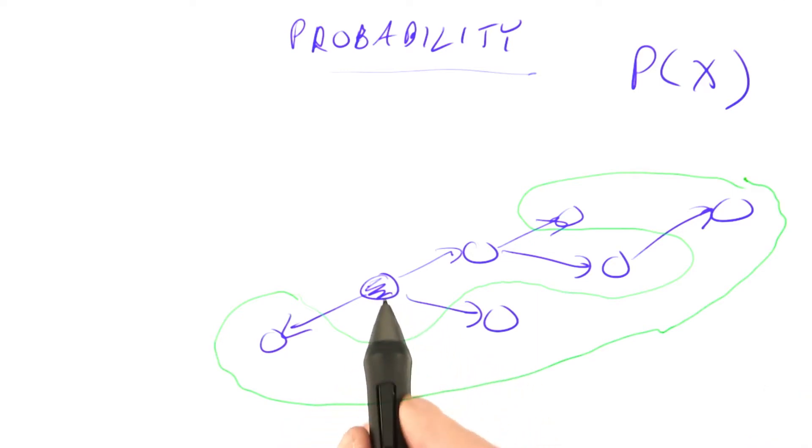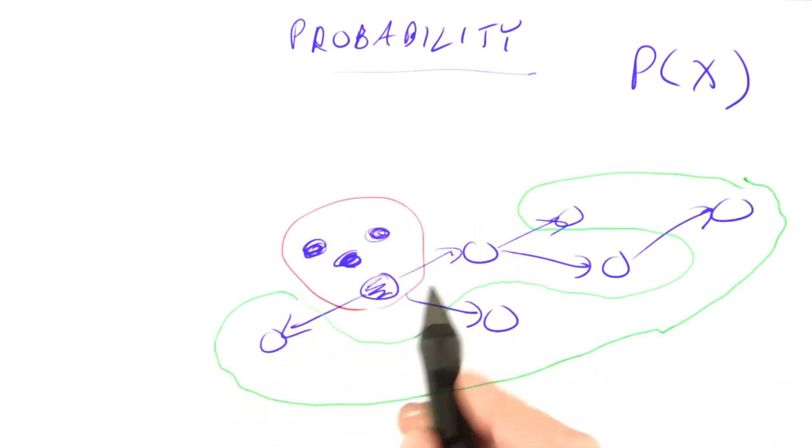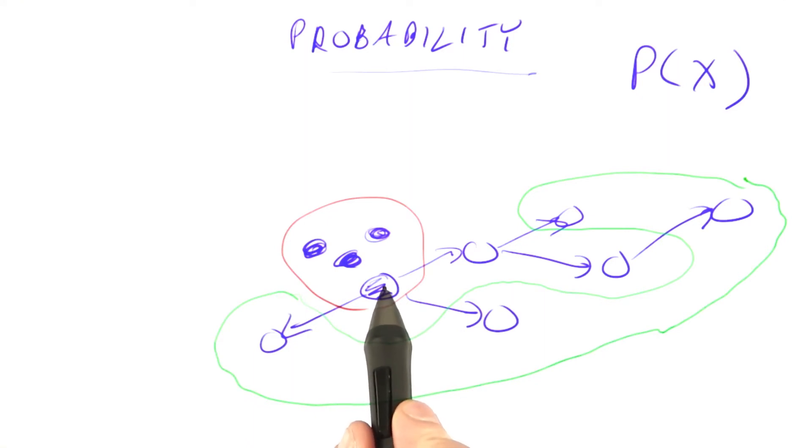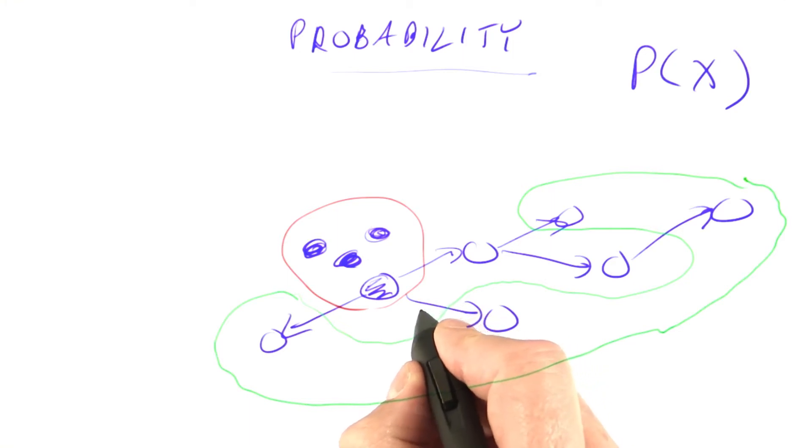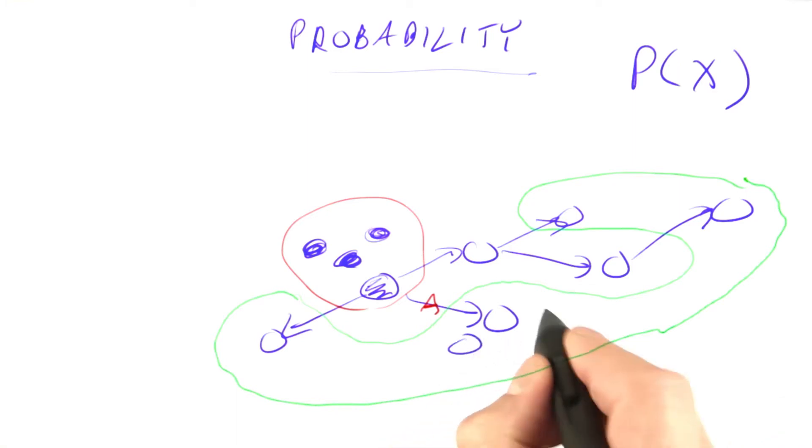One, we can be uncertain about the current state. Rather than knowing exactly where we are, it may be that we start off in one of four possible states, and all we know is that we're somewhere in there, but we're not sure exactly where we are. The other place uncertainty can come in is when we apply an action, say this action here, action A. It may be that we don't get to one specific state, but rather we're uncertain as to what the action will do, and we might end up in this state, or this state, or this state, instead of the one that we were aiming at. We'll see techniques for dealing with both of these types of uncertainty.